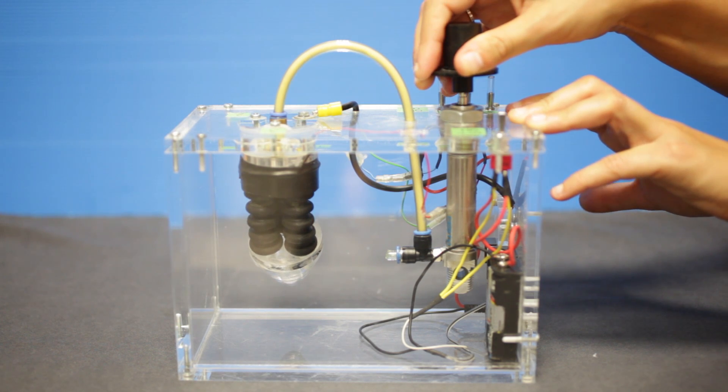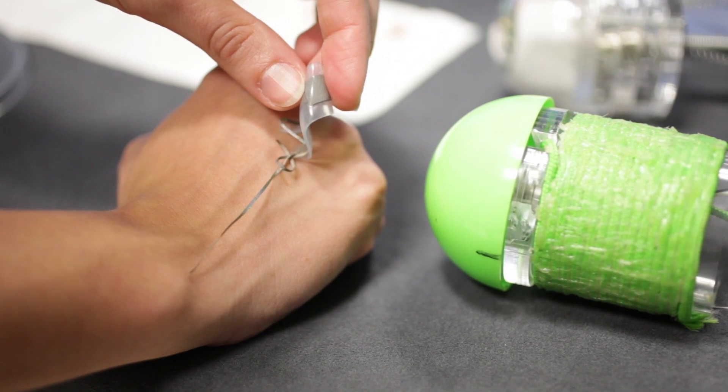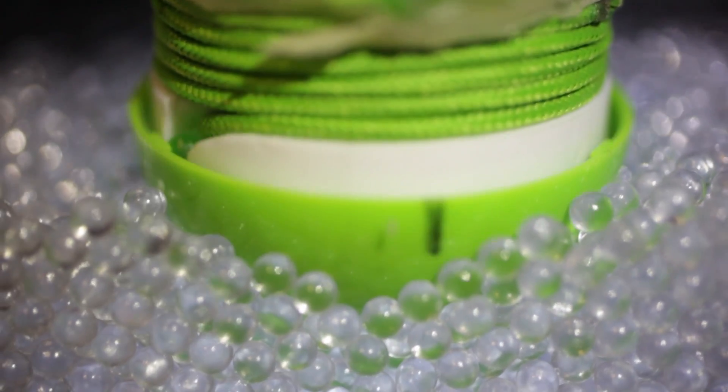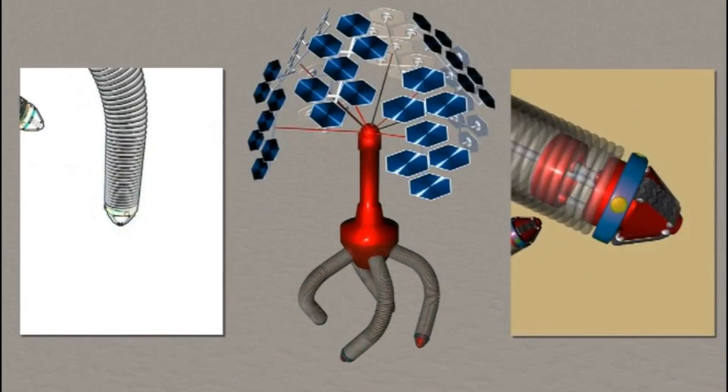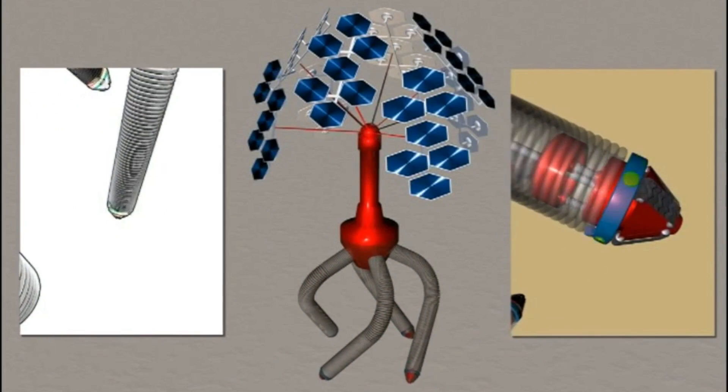We can also use the robot for space applications, because it is important not only for finding new living systems or water on different planets, but also for the anchoring capability that plants have. Plants show very high elasticity — the capability to adapt to the environment in an active way and at the same time to change the surrounding environment.